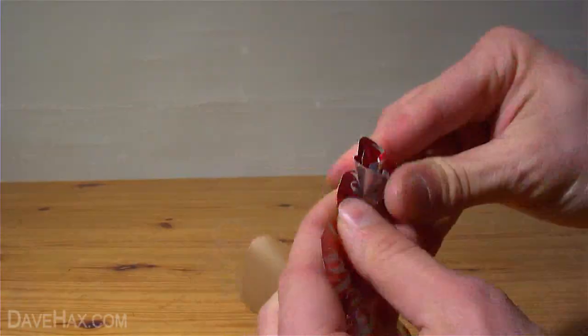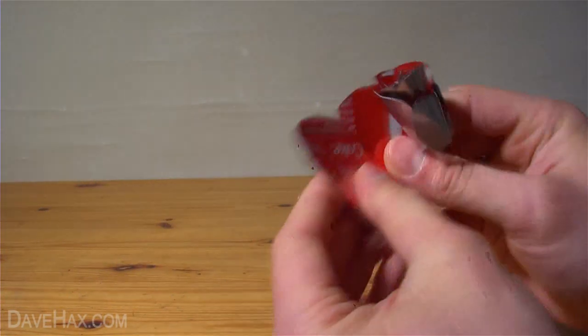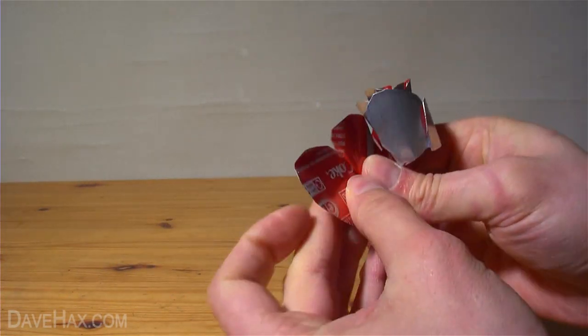The further round the spiral you get, the more rose-like it should look. Keep going until you get to the last petal. Fold and curl it into place.